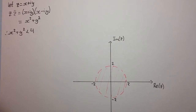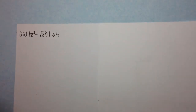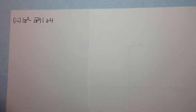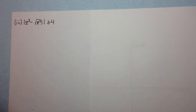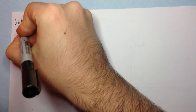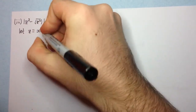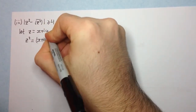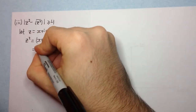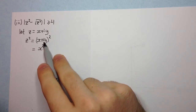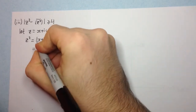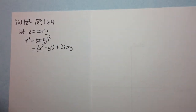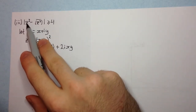Now the final problem: the modulus of z² minus the conjugate of z² is greater than or equal to 4. We need to simplify this. We start by letting z equal x + iy. We want to work out what z² is: z² = (x + iy)². Expanding this gives x² + 2xiy + i²y² = (x² − y²) + 2xyi. So the real part is x² − y² and the imaginary part is 2xy. Here we're going to use the fact that what we have is a complex number minus its conjugate.